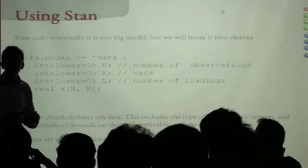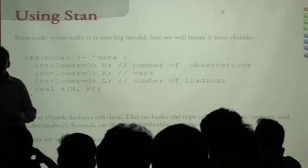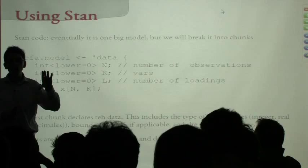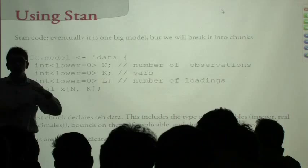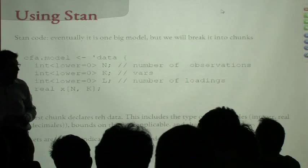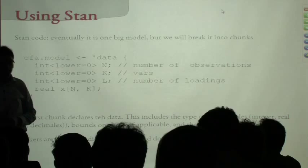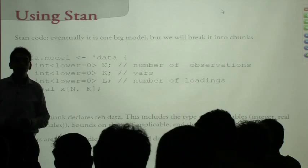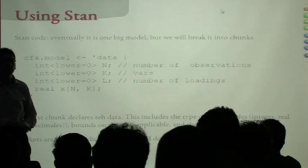Regarding the choice of inverse-gamma for the variances: it's nice because it's bounded and doesn't go below zero, which you want for a variance. With the (0, 0, 1, 1) parameterization it has relatively low density across zero to infinity, so it's not a strong prior — relatively vague. I didn't have any particular theoretical reason in this case; I was choosing things that often work generally.